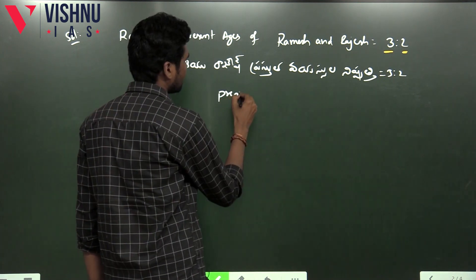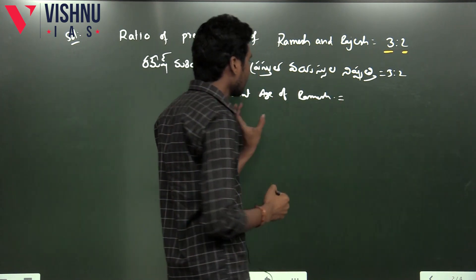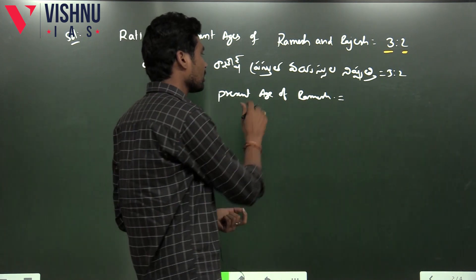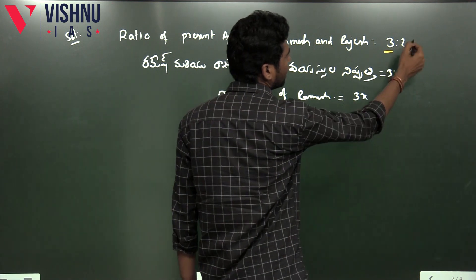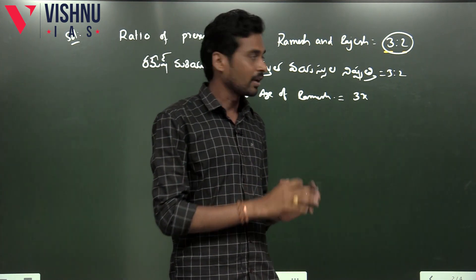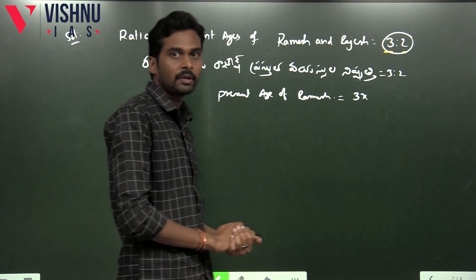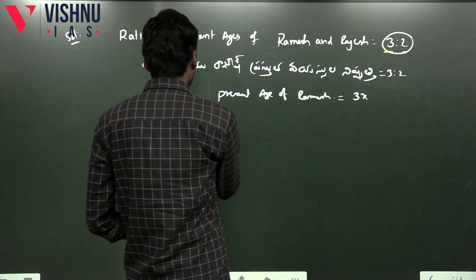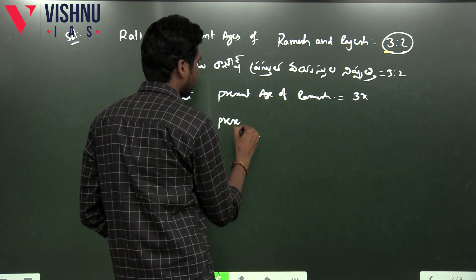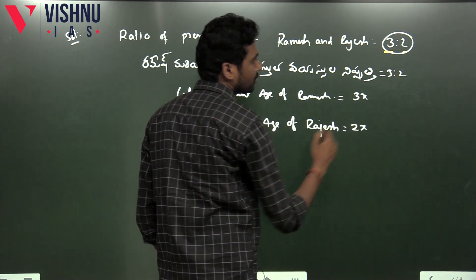The present age of Ramesh — let's say Ramesh's present age is 3x. So, we need to express the ratio 3 to 2 in mathematical terms. We represent it as 3x and 2x. Present age of Ramesh is 3x, and present age of Rajesh is 2x. The ratio is intended to multiply two terms.